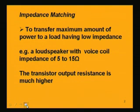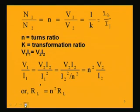This transformer is used to transfer maximum power to a low-impedance load — for example, a loudspeaker where the voice coil impedance is only around 5 to 15 ohms — while the transistor output resistance is much higher. The turns ratio N is N1 to N2, and it equals V1 divided by V2, so it determines at what ratio the supply voltage is transferred to the secondary winding side.